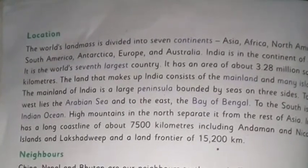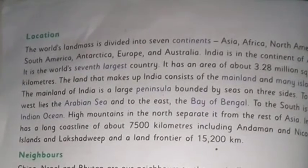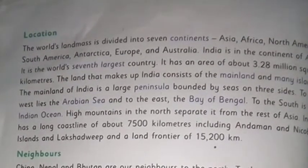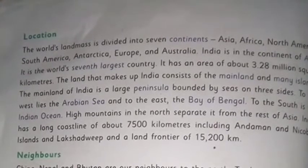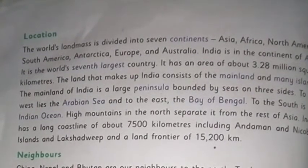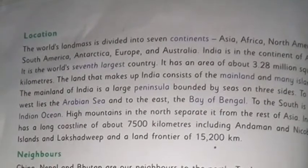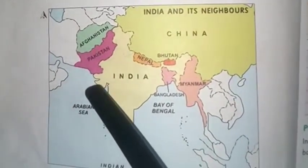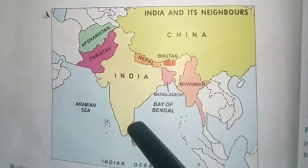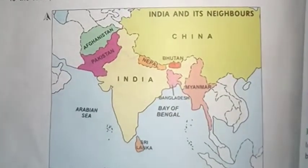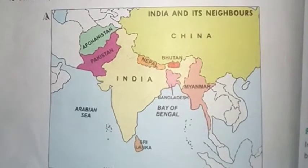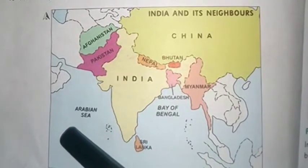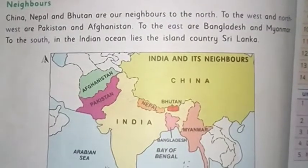The land that makes up India consists of mainland and many islands. The mainland of India is a large peninsula bounded by sea on three sides. Peninsula means this portion which is surrounded by oceans. The seas surrounding our country India are the Bay of Bengal, the Indian Ocean, and the Arabian Sea.